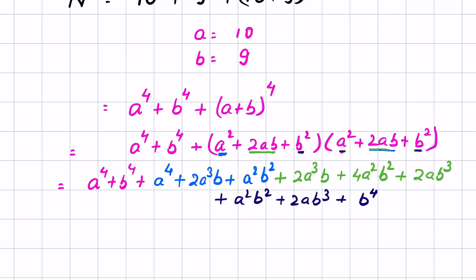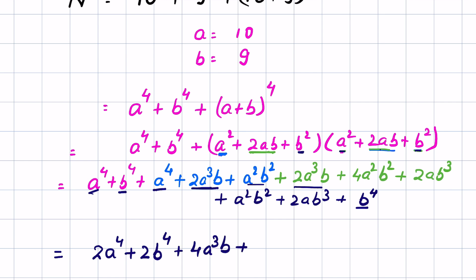Now adding all terms: a to the power 4, plus b to the power 4, plus 2a cubed b plus 2ab cubed gives 4a cubed b plus 2ab cubed, plus a squared b squared plus a squared b squared plus a squared b squared gives 6a squared b squared. So (a plus b) to the power 4 equals a⁴ plus 4a³b plus 6a²b² plus 4ab³ plus b⁴.